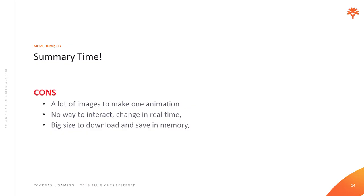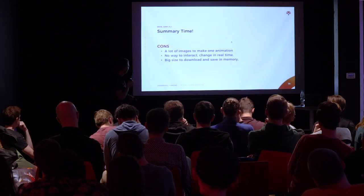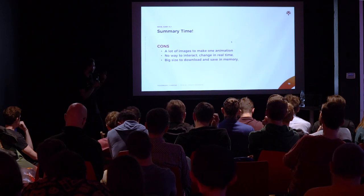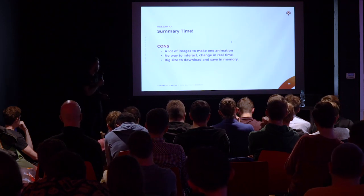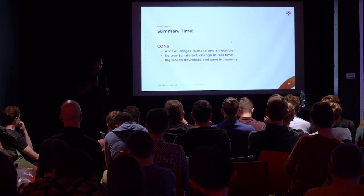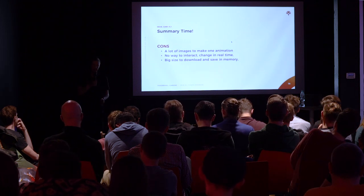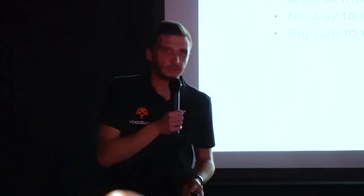And the cons: we need a lot of images to make one animation — as mentioned, this tiger requires a 4K by 4K sprite sheet, so it's huge, and that's only one animation. It's very difficult to change it in real time. Because of the size and amount of images, we need to be aware that we can really increase the size of our game — a lot of stuff to download. This also has to be decompressed and uploaded to the GPU, so more images require more space in RAM and GPU memory.